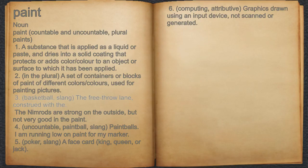3. Basketball. Slang. The free throw lane, construed with 'the'. For example: the Nimrods are strong on the outside, but not very good in the paint.